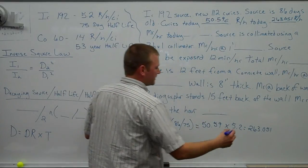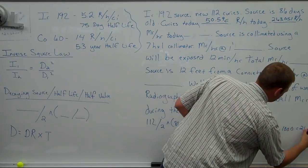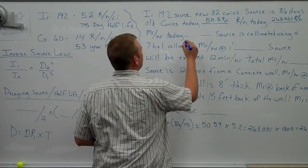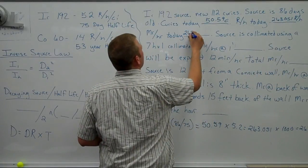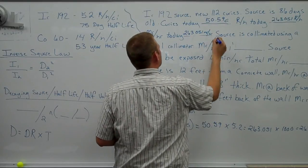Now we need milliRankins per hour. So that's a simple move of the decimal or multiply by 1,000. 263,051 is what we've got there. So I'm going to park that up here, mR per hour.